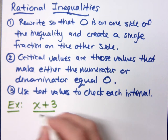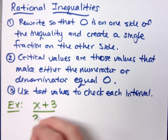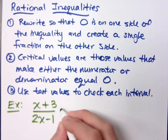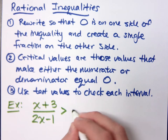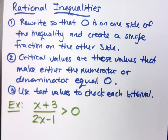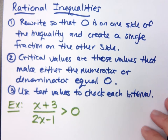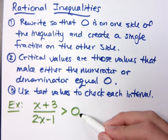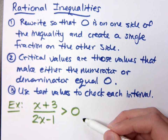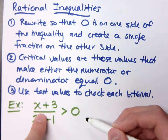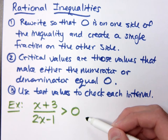Take the inequality: (x + 3) divided by (2x − 1) is greater than 0. Notice that step 1 is already done — I have 0 on one side of the inequality and a single fraction on the left side. So step 1 is done, and I move on to step 2.